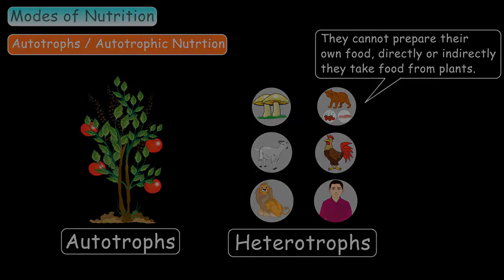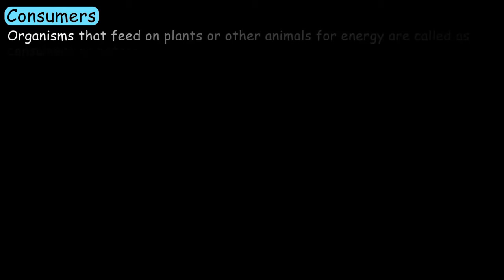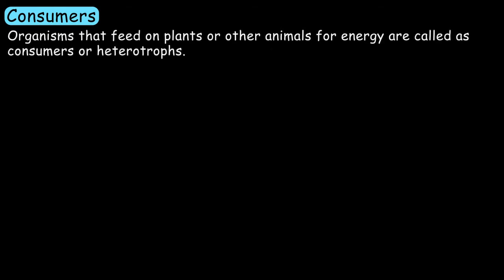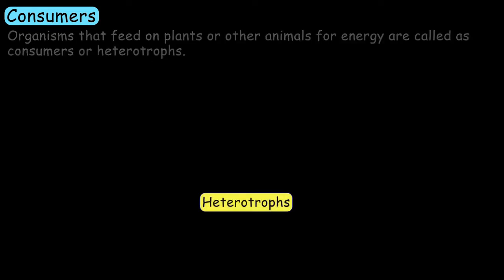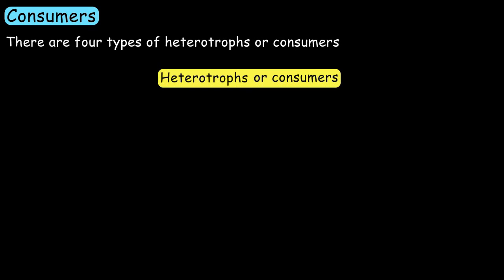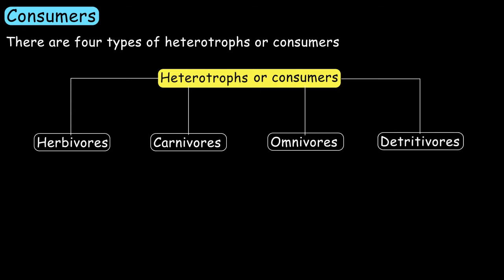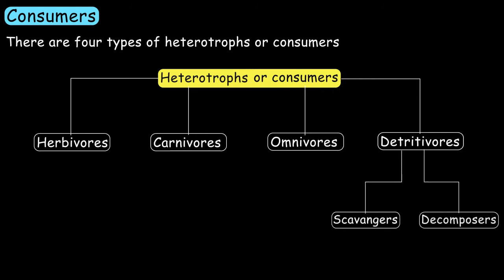Today, we will learn about consumers, types of consumers, and their modes of nutrition. They are the organisms that feed on plants or other animals for energy, and they are also known as heterotrophs. There are four types of heterotrophs or consumers: herbivores, carnivores, omnivores, and detritivores. Detritivores are further categorized into scavengers and decomposers.